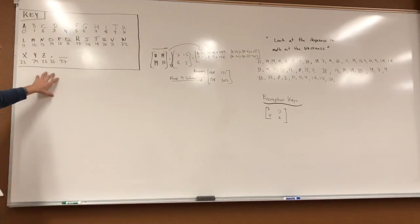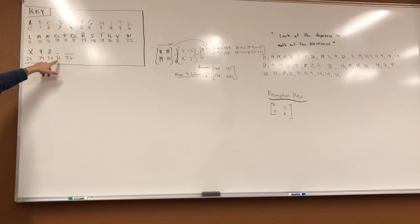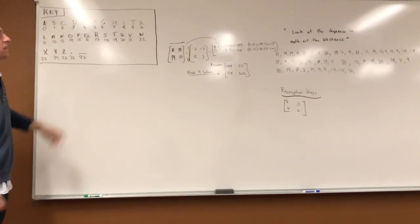First thing you're going to need is your key, so A through Z, 0 through 25, and then we added 26 and 27 for a period and space.